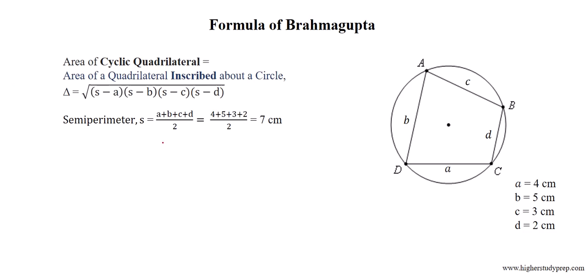Brahmagupta's formula: the area of a cyclic quadrilateral — a quadrilateral inscribed in a circle — is equal to the square root of (s minus a) times (s minus b) times (s minus c) times (s minus d), where s is the semi-perimeter and a, b, c, d represent the lengths of the four sides.